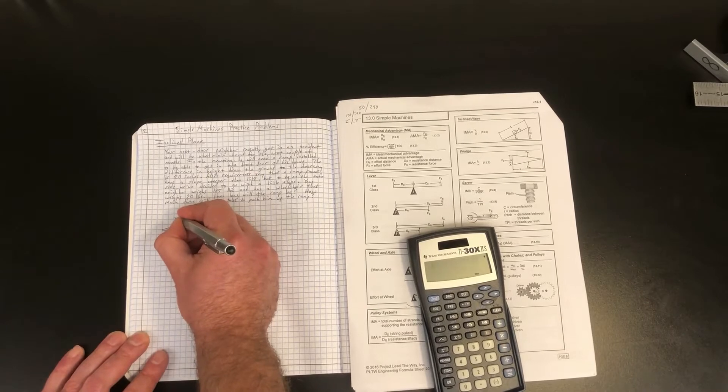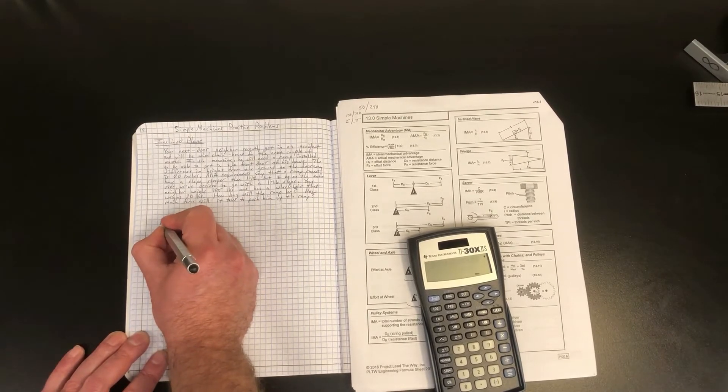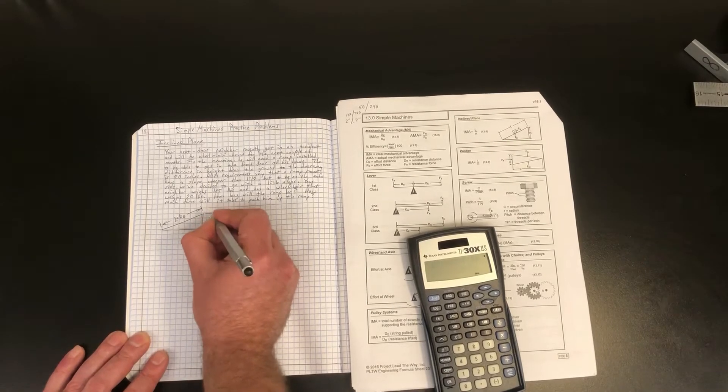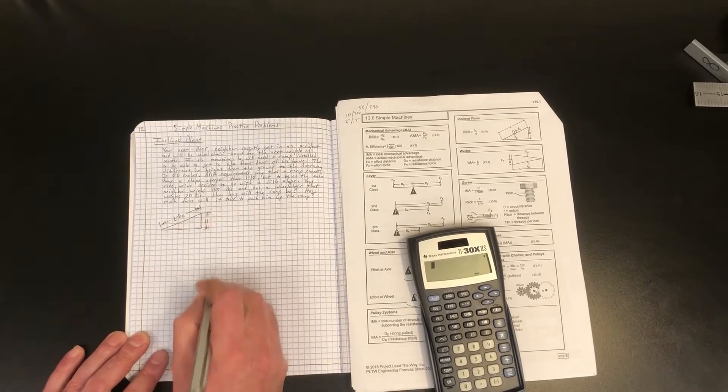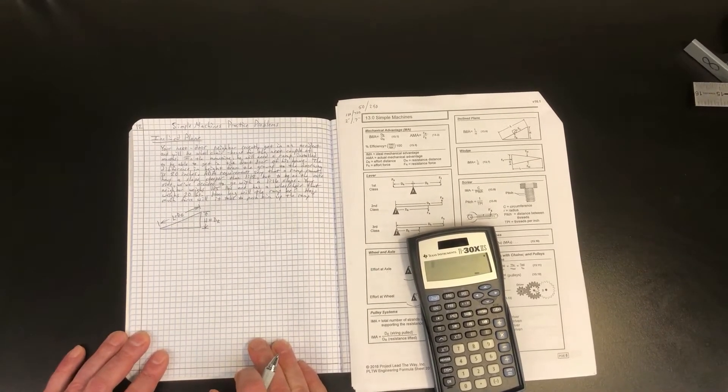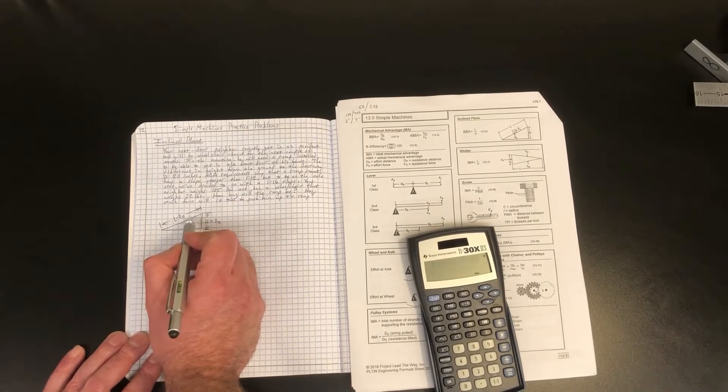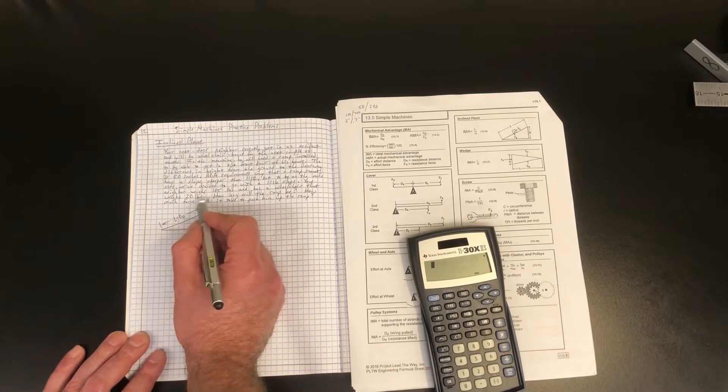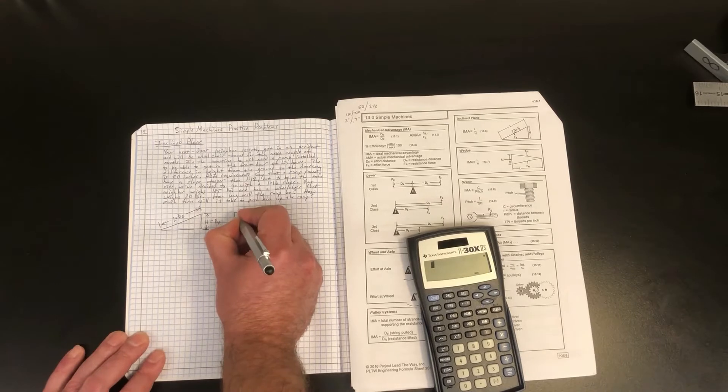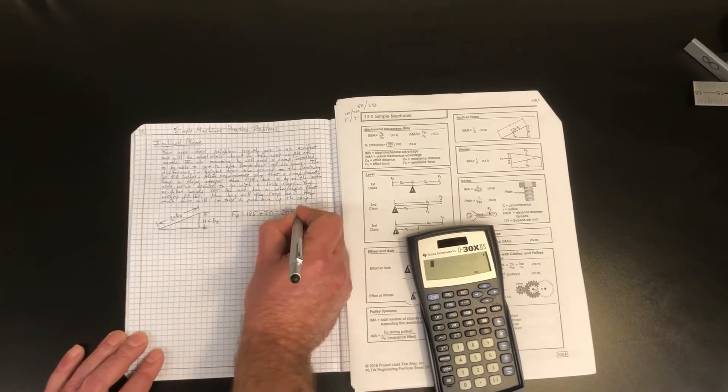We want to label L, which is equal to effort distance, and that is the length of the slope, or you can also call it the hypotenuse of that triangle. And then we're also going to label H as the height of the inclined plane, and we're going to say that H is also the same as resistance distance. We know that our resistance force, because we're going to be pushing your neighbor up this slope, is going to be a combination of the weight of your neighbor and the weight of the wheelchair. So I'm going to label resistance force as 185 plus 20, or 205 pounds is our total resistance force.